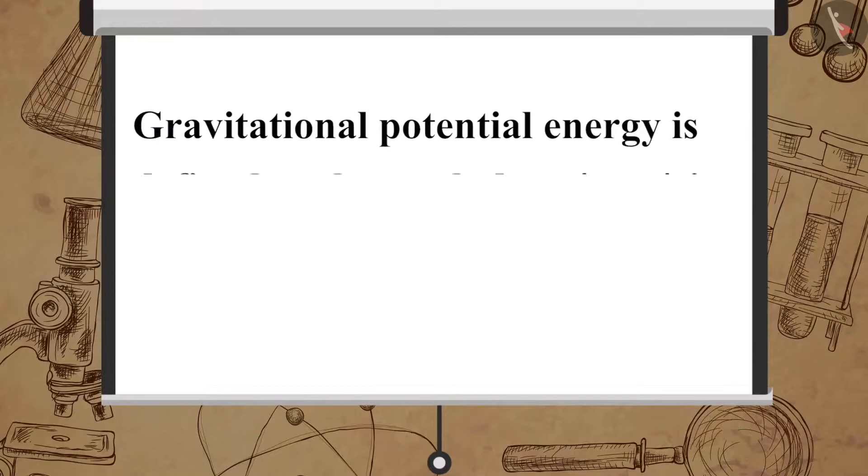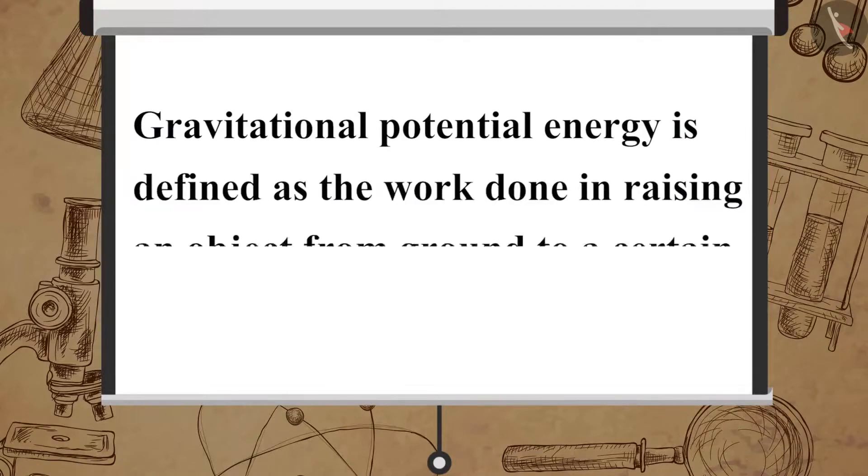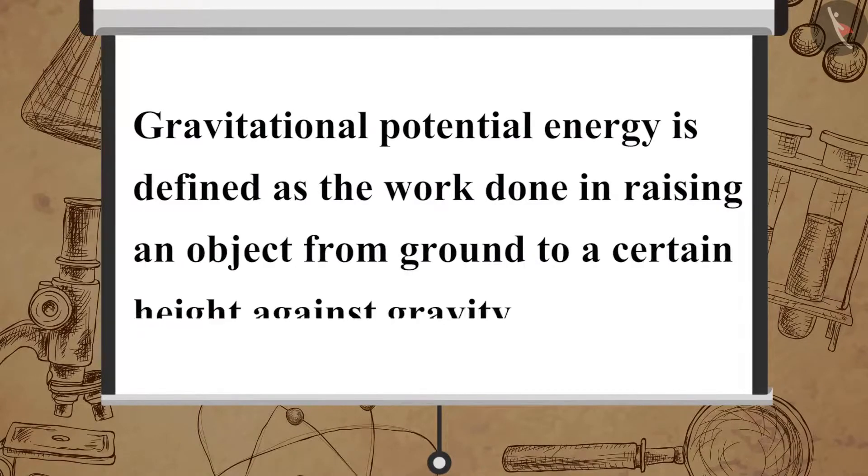This energy possessed by the object is termed as gravitational potential energy. Gravitational potential energy is defined as the work done in raising an object from ground to a certain height against gravity.